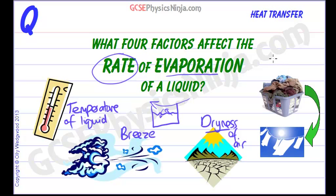And thirdly and fourthly, it's the surface area — the surface area of the liquid. You wouldn't dry your washing by just putting your basket of damp washing in the garden; you put it on a line. Why do we put it on a line? Because we increase the surface area of the damp washing, and that means there is more chance that liquid particles can escape from the washing as a gas. So surface area is very important.